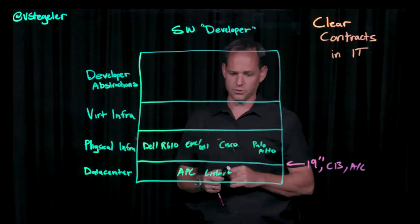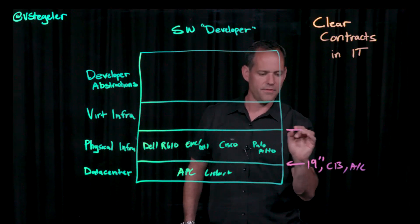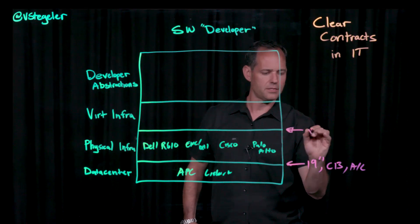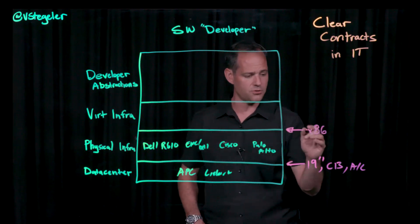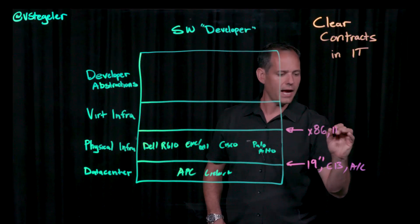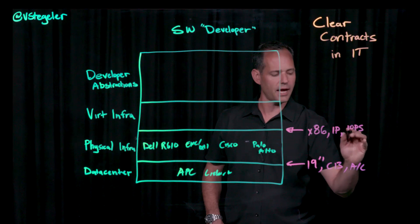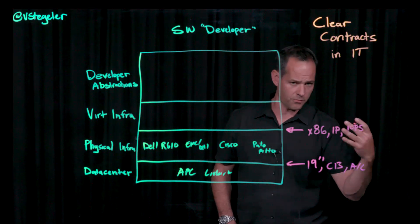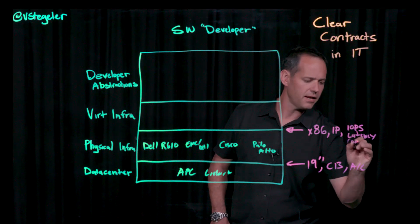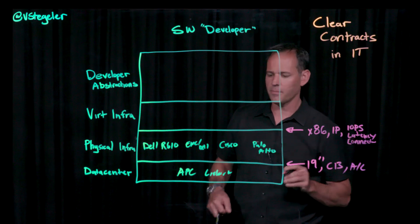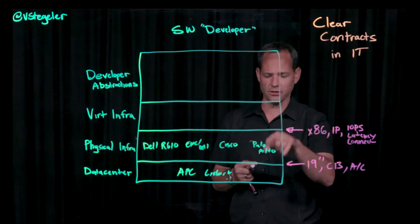Let's move up to virtual infrastructure. What is their clear contract with the physical infrastructure folks? For them, it has to be x86, and if we're doing VMware, it needs to be on some sort of hardware qualification matrix to ensure compatibility. You need IP connectivity, and you're probably going to need some performance from storage — like IOPS from a performance perspective, or latency — and even connectivity, like whether you need shared storage.